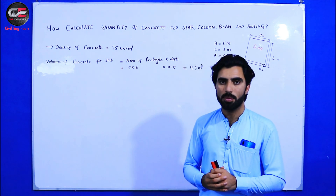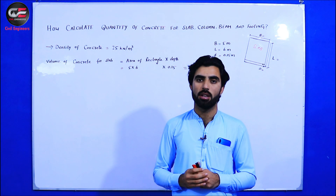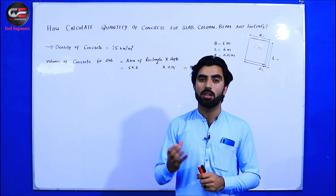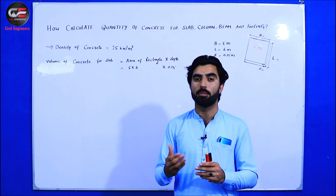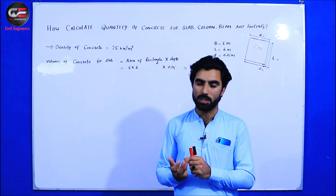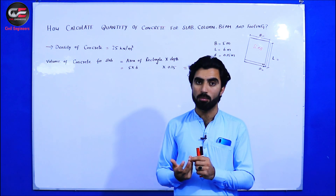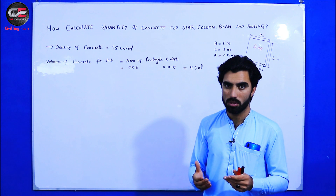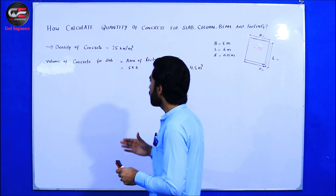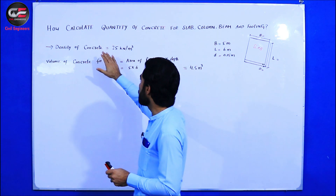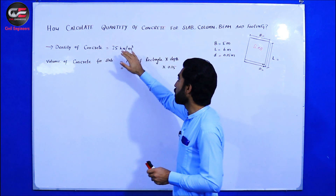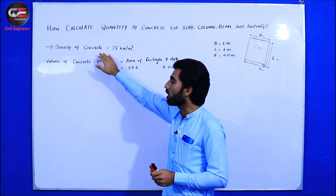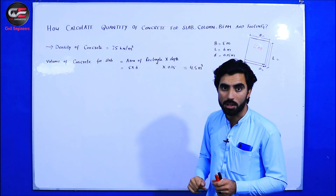Before calculating material quantities like cement, sand, and aggregate, we will first find the volume of the slab. If you want to find the quantity of material in a slab, you find the volume of slab; similarly, volume of column, volume of beam, volume of footing, etc. The density of concrete is about 25 kilonewton per meter cube — remember this point.